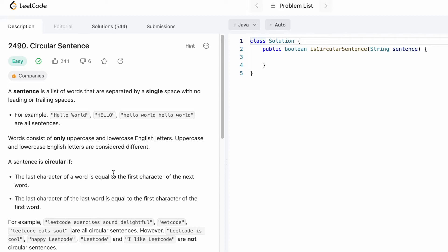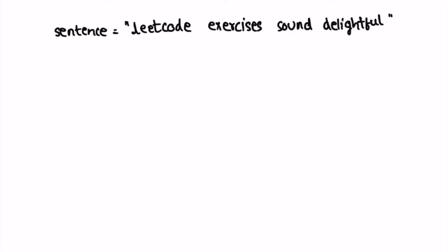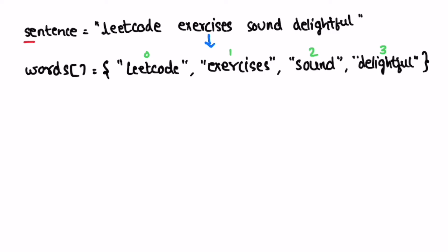Now let's take a look at how this question can be solved. The input given to us is 'leetcode exercises sound delightful'. We start off by converting the input string into an array. After converting the input string sentence into an array, it will look like this. Now we have to check the length of the words array — if the length is greater than one, then we process it; if the length is equal to one, then we check for the single word.